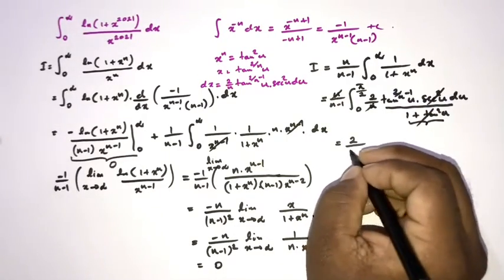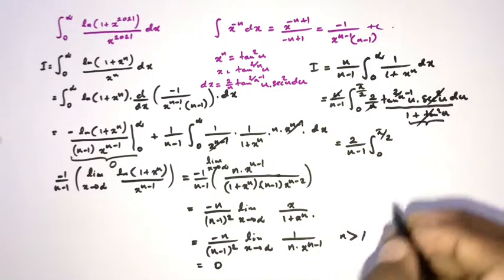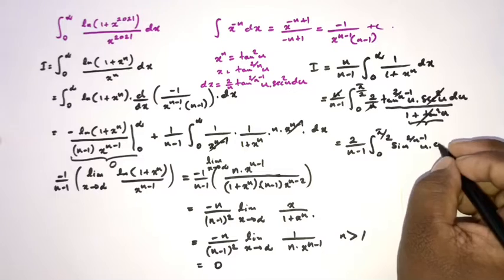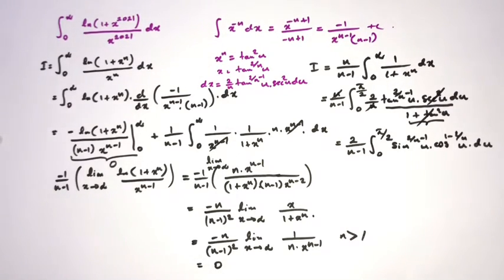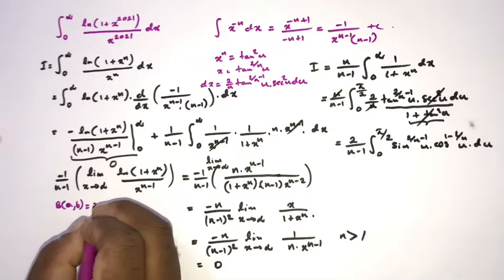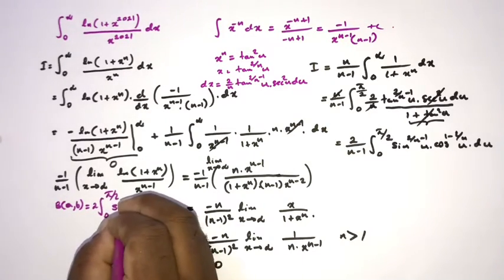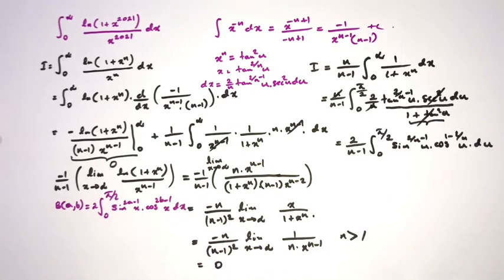Writing tan in terms of sine and cosine, the integral becomes (2/(n-1)) times the integral from 0 to π/2 of sin^(2/n - 1)(u)·cos^(1 - 2/n)(u) du. We recognize this as a standard beta function form. Recall the definition: β(a,b) = 2 ∫₀^(π/2) sin^(2a-1)(x)·cos^(2b-1)(x) dx.